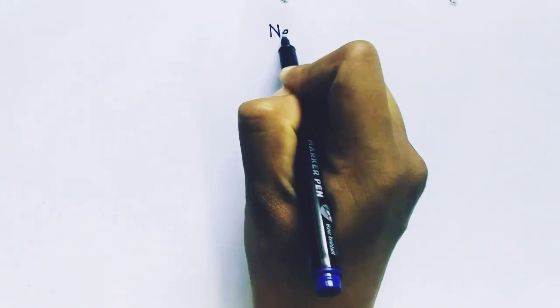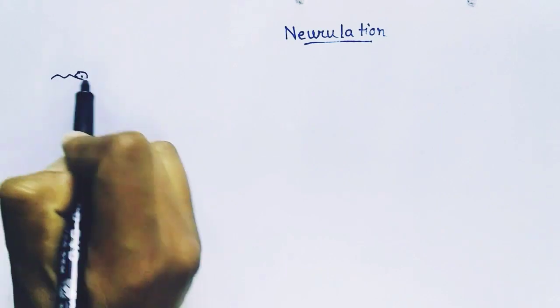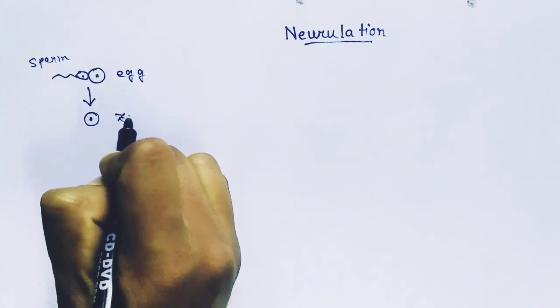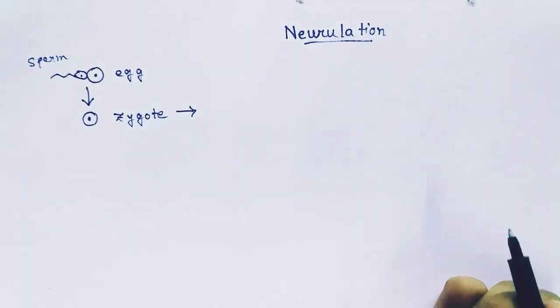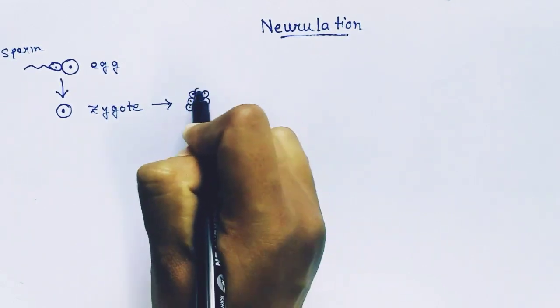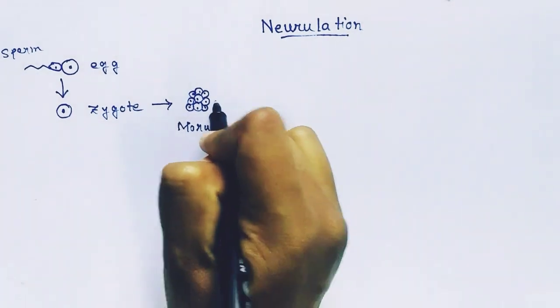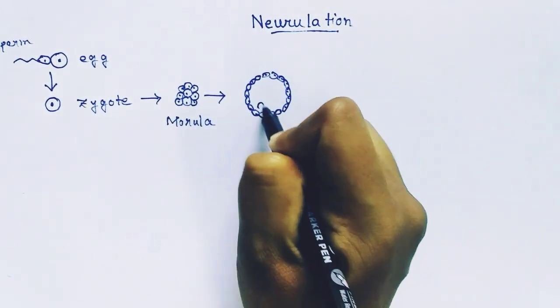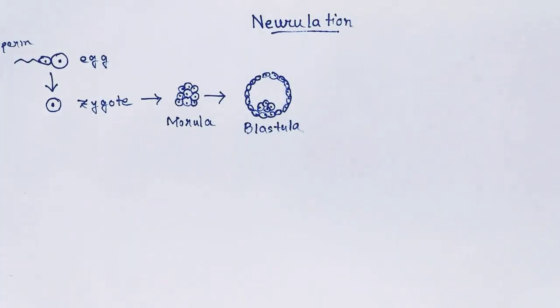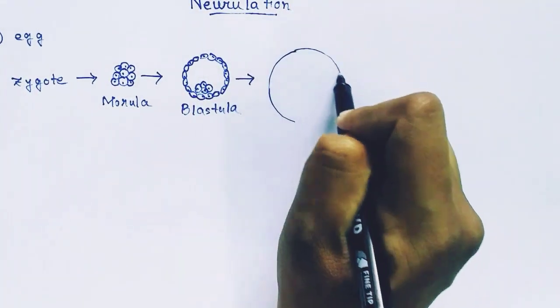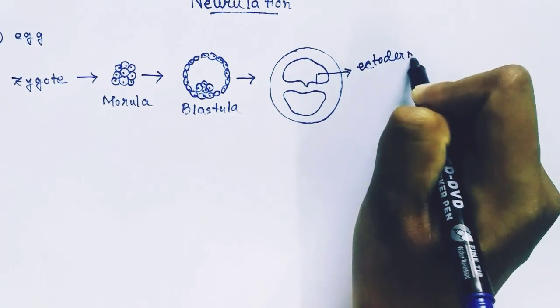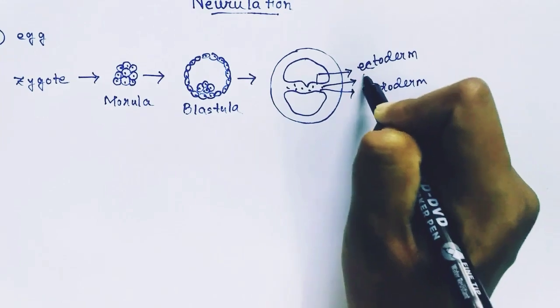Today we will talk about neurulation, which is the formation of the neural tube. But before getting into that, we will do some recap. When a sperm fertilizes an egg it forms a zygote — one cell which will differentiate into a cluster of cells and reach the morula stage. After the morula stage the cell divides and forms a blastula having a cavity filled with fluid. After the blastula stage it reaches the gastrula stage, having ectoderm, mesoderm, and endoderm — the three germ layers.